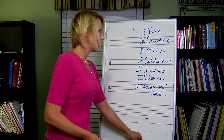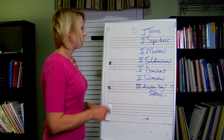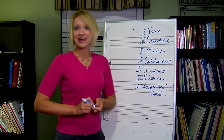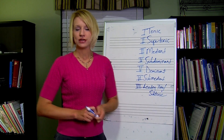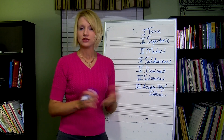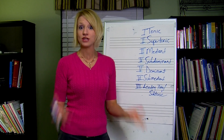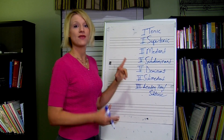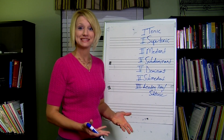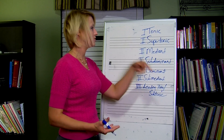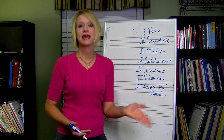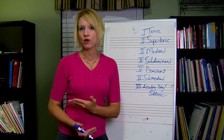Basically the way this works is: whatever your scale is, your scale degree, your keynote, your tonic — that's your tonic. And then whatever the second scale degree is, we call it the supertonic. Remember, a scale is in order all the time.